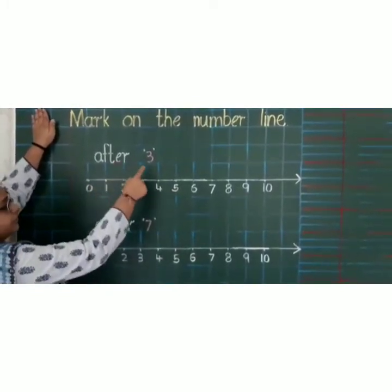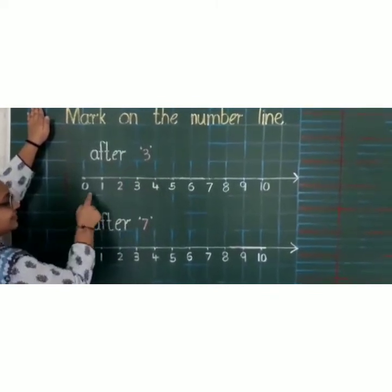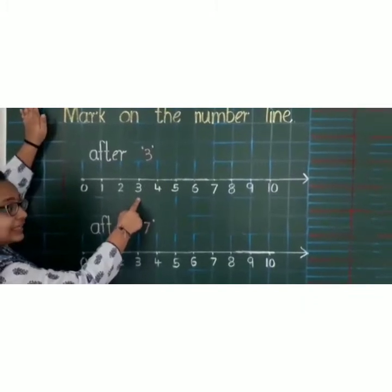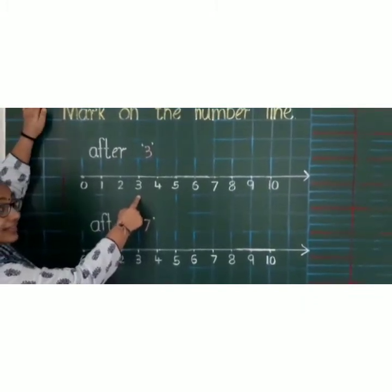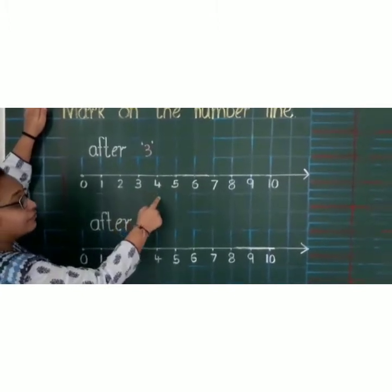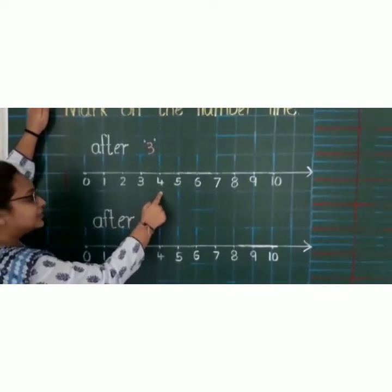After, which number is this? Yes, 3. And where is 3 on the number line? Here. Now, tell me, what comes after 3? 3 ke baad kya aata hai? Yes. After 3 comes 4. So we will encircle 4. Because 4 comes after 3.